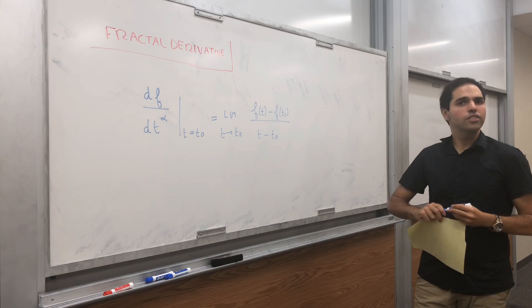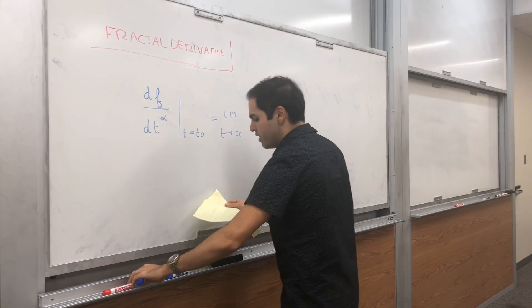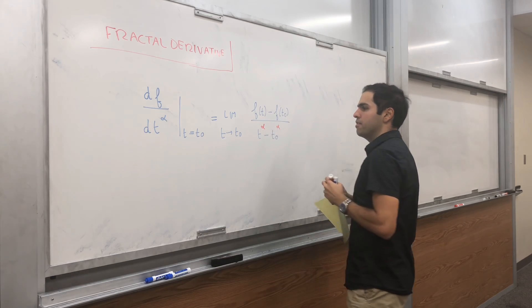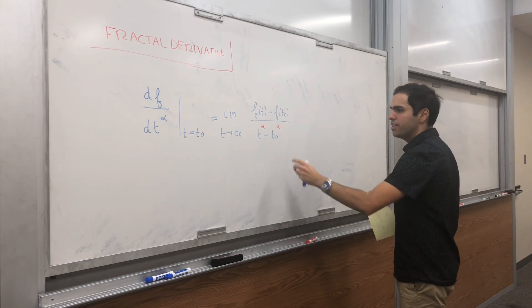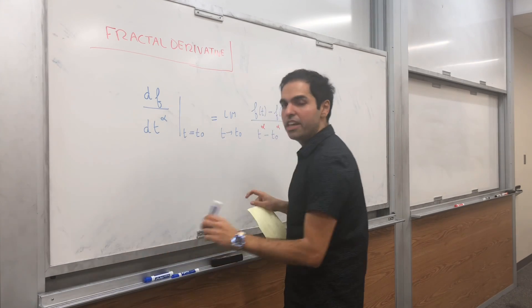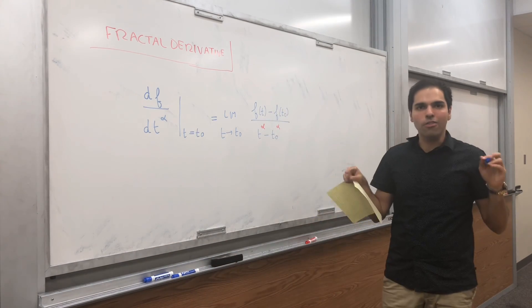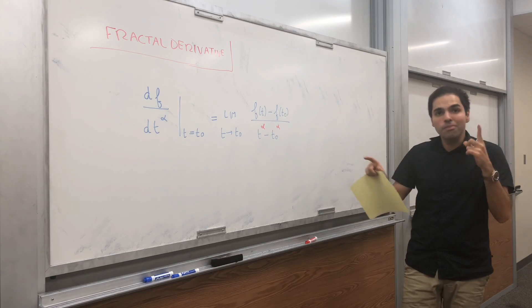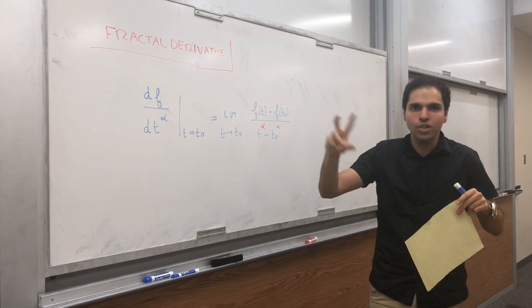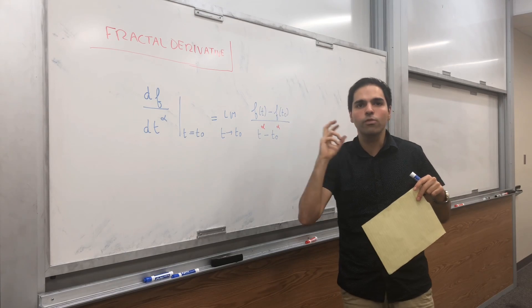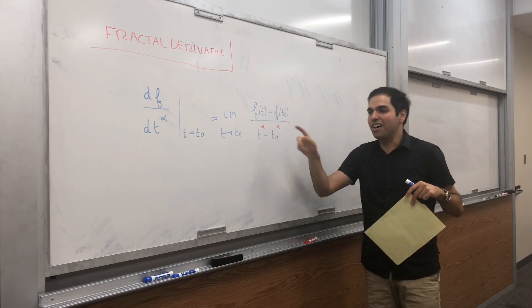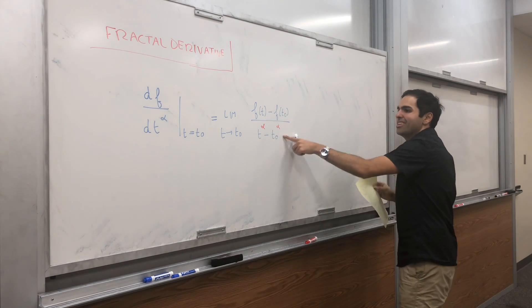So far, just a definition of the derivative. The only change is you put an alpha here. So you're raising your denominator, each of them, to the power of alpha. And if you know Hausdorff measure, this should also remind you of Hausdorff measure, where you're measuring your set with balls of radius of size alpha. So, that's how it makes sense.